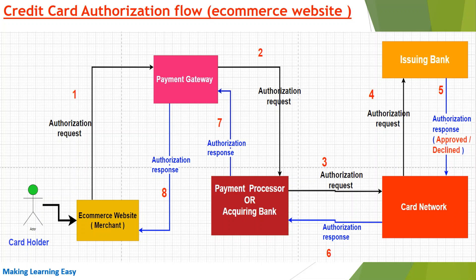Once the payment gateway understands where to send the request, it forwards it to the payment processor or acquiring bank. Once the payment processor receives the authorization request, it checks which card network the request needs to be sent to. For example, if the request is from a Visa credit card, it sends to the Visa network; if from American Express, to the Amex network. The payment processor determines this by looking at the first digit of the credit card number.